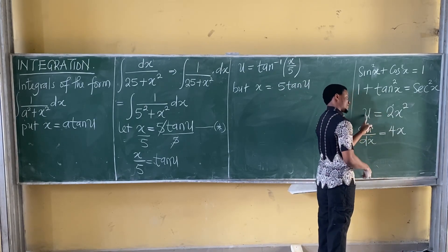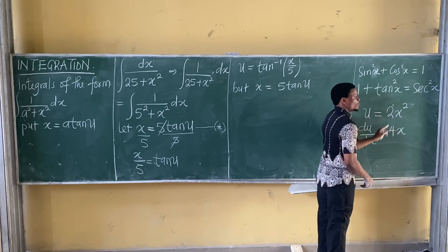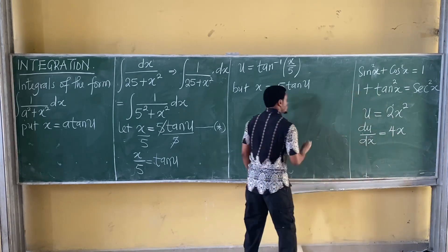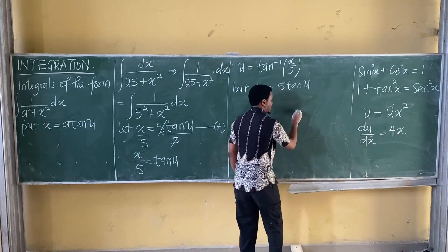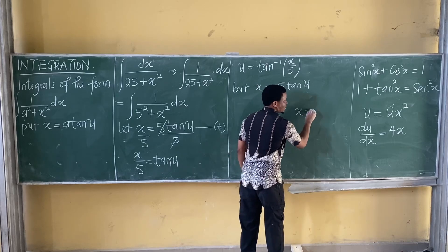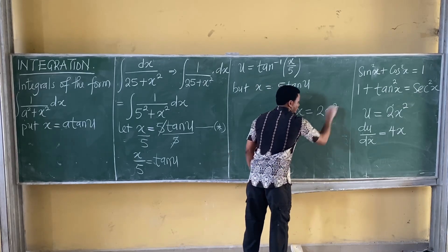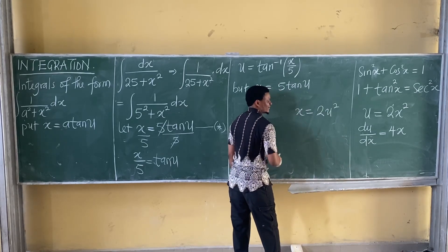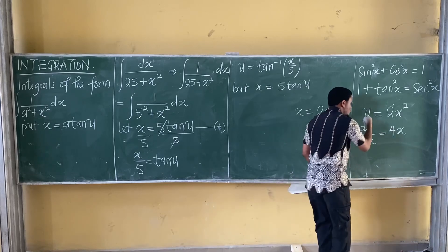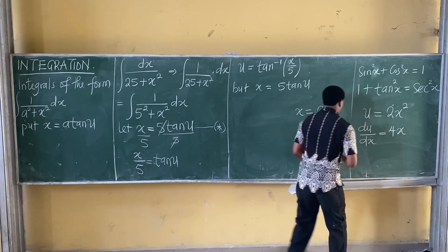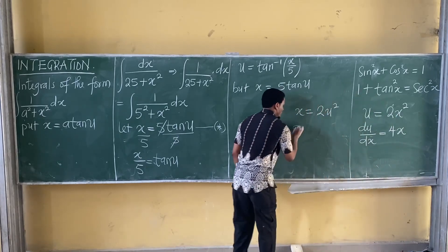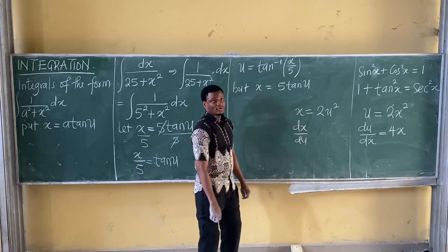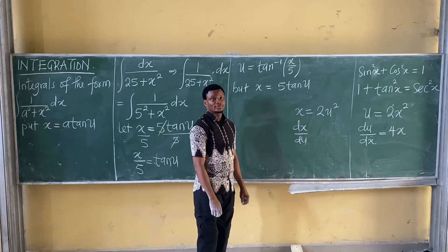u was here, x was here. What if I swap it? What if I now have something like x equal to 2u squared? What do you think I will have here? This one here is du over dx — because of what? Good, good, that's it.